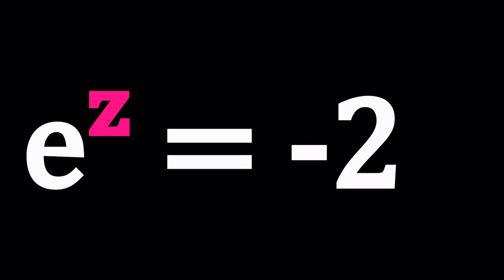Hello everyone, welcome to A plus BI. This channel is all about complex numbers, and in this video we're going to be solving a very nice exponential equation with complex numbers. So we have e to the power z equals negative 2, and we're going to be solving for z values, where z is a complex number.